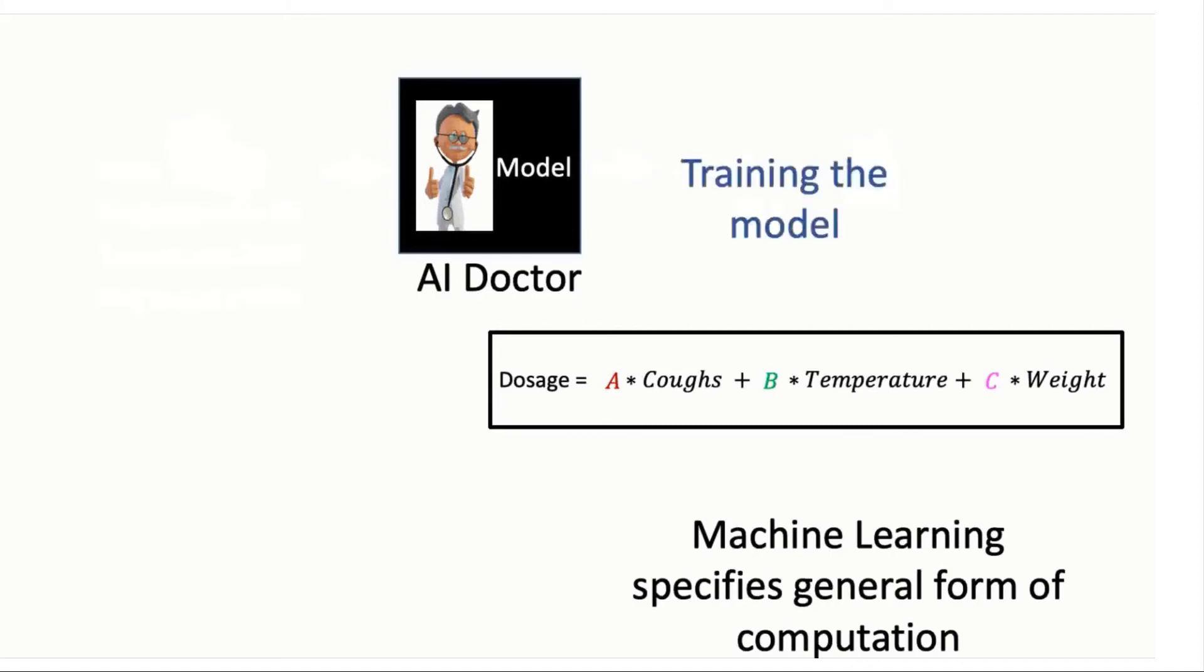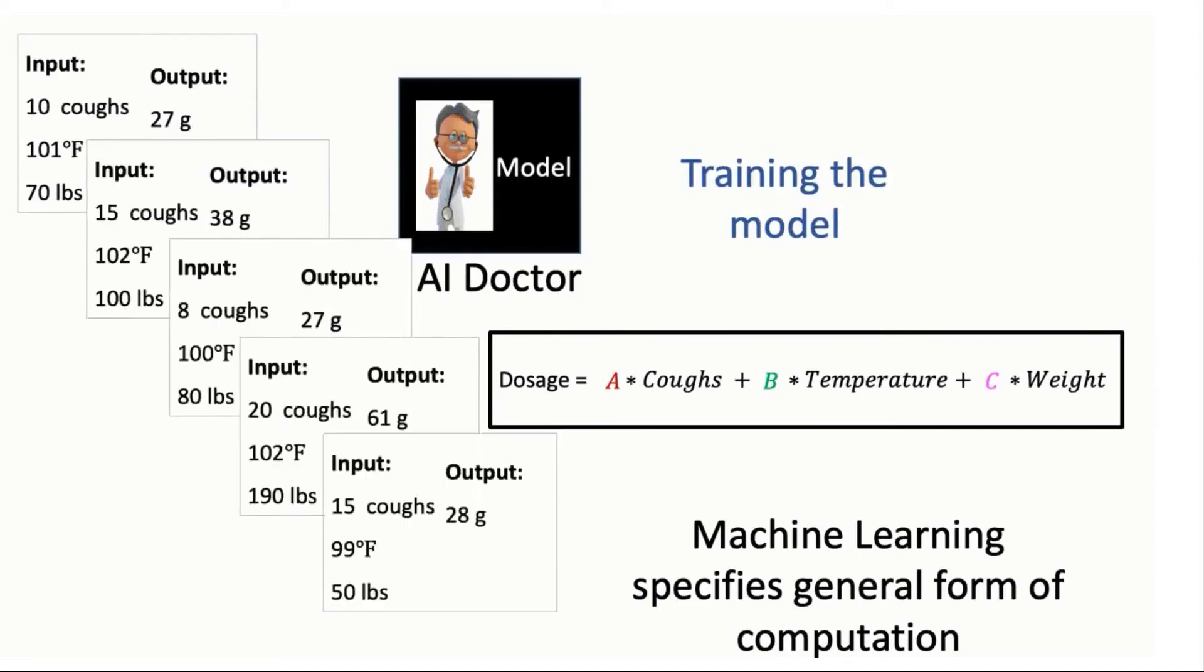During the learning process, we train these models by providing them with training data, which means we give the model many examples of inputs, and we also specify the criteria for what makes good outputs in response to this training input.